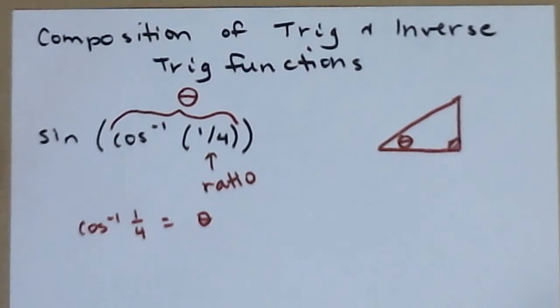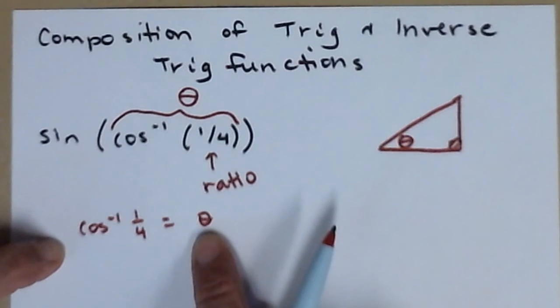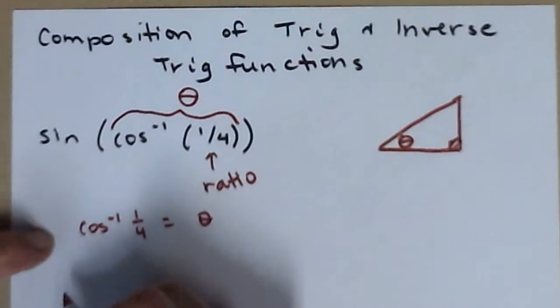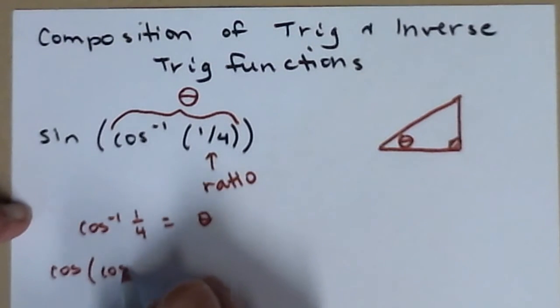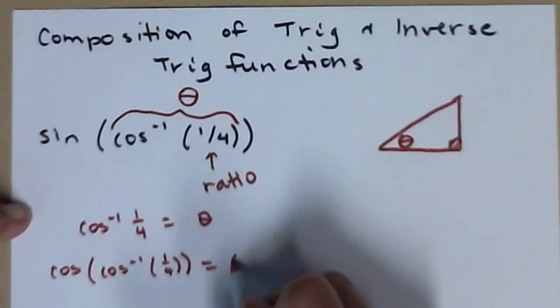Now if I apply cosine to both sides of this equation, I have the cosine of the inverse cosine of one-fourth equals the cosine of theta. With me?